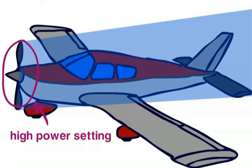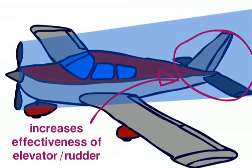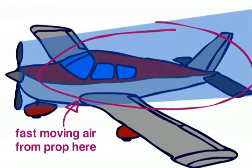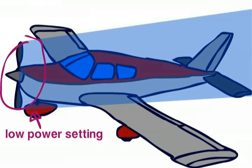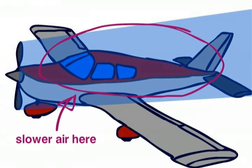In this Cherokee, for example, high power settings will result in sensitive elevator and rudder controls, due to lots of air being chucked backwards and over these control surfaces. Low power settings will result in heavier controls.